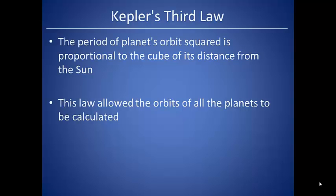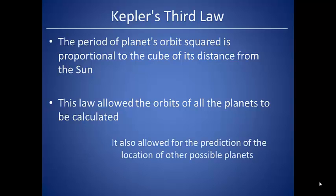So Kepler's third law says the period of a planet's orbit squared is proportional to the cube of its distance from the sun. And this law has allowed the orbits of all of the planets in our solar system to be calculated. It has also allowed for the prediction of the location of other possible planets in other solar systems.